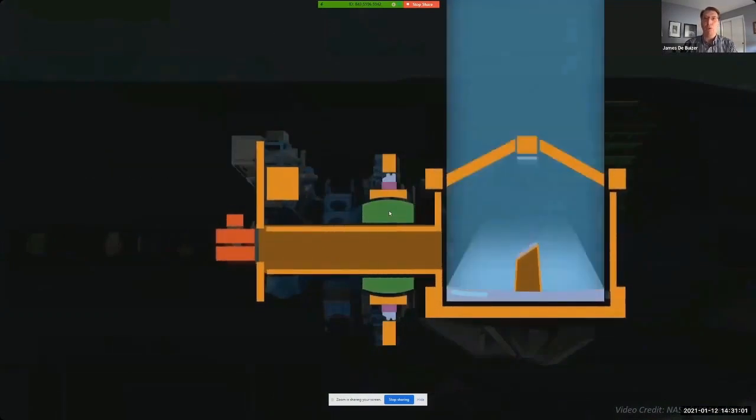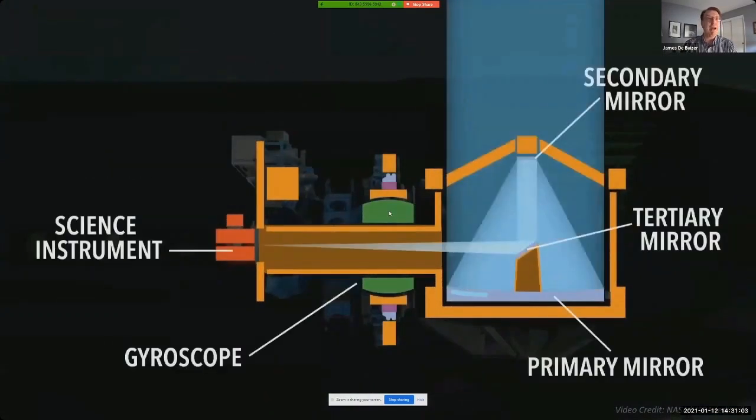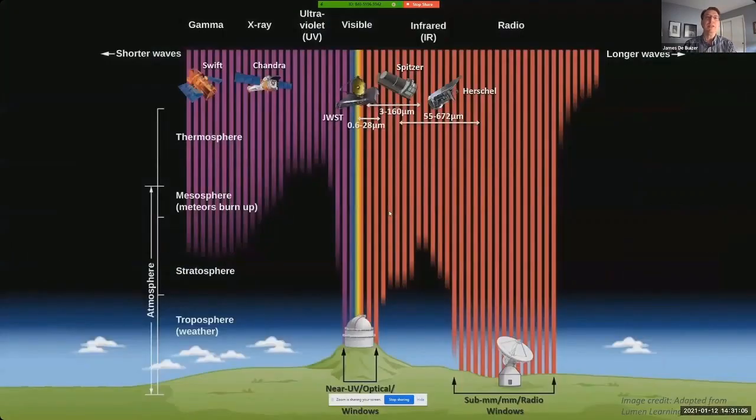So you might ask, why build an observatory out of an aircraft? Well, we see here that there's a large swath of wavelength space from about 25 to 350 microns where light does not make it to ground-based observatories. SOFIA flies in the stratosphere, and that's high enough to get above 99.9% of the atmosphere's infrared-absorbing water vapor, and that allows it to observe a very broad wavelength range that entirely encompasses the far infrared.